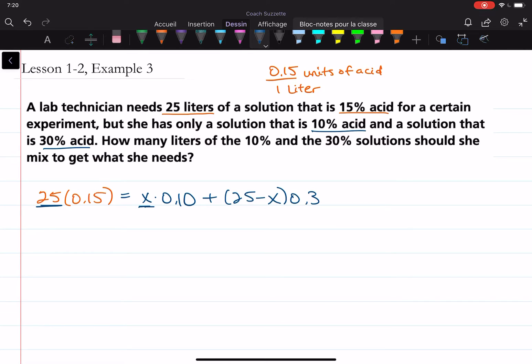Okay, so let's solve for X. Once we solve for X, let's write that down somewhere. X is the number of liters of the 10% solution. All right, so let's do this. 25 times 0.15 is 3.75.